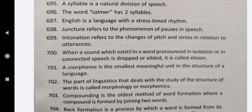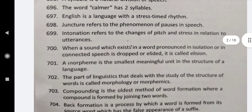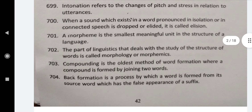A morpheme is the smallest meaningful unit in the structure of a language. The part of linguistics that deals with the study of the structure of words is called morphology or morphemics. Compounding is the oldest method of word formation where a compound is formed by joining two words. Back formation is a process by which a word is formed from its source word which has the false appearance of a suffix.